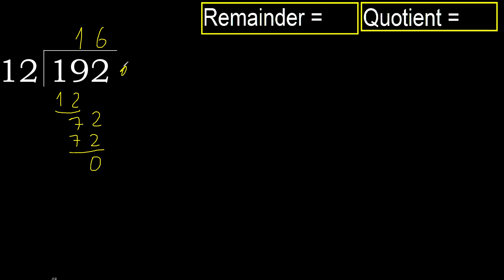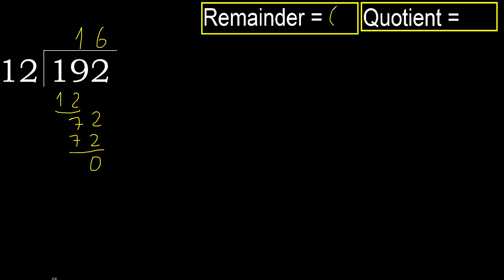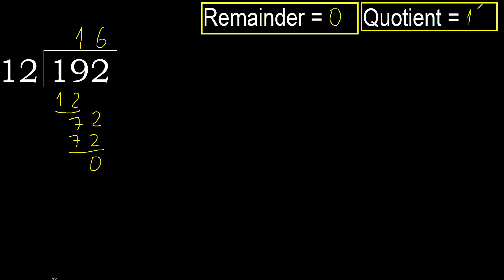There is no next number, therefore finish. 192 divided by 12 is 16.